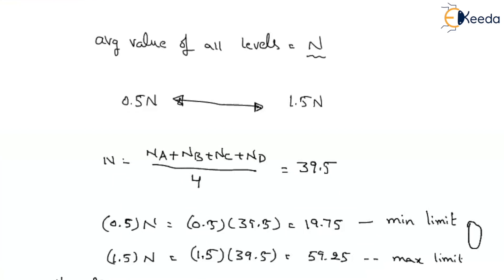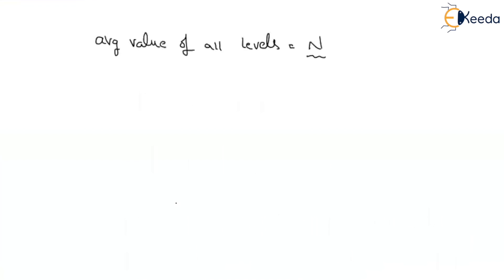So, out of the four values, three values are coming within the limit. One value is not coming within the limit. So that is why you have to neglect that value and you have to consider the average. Now, as NC is not coming within the limit, it has to be discarded. Then, take the average of remaining three.